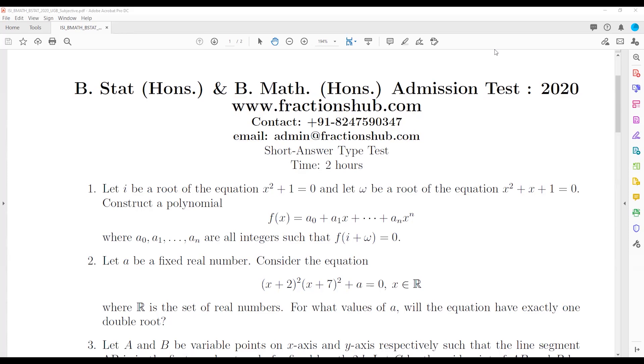one equals to zero, then you need to construct a polynomial where that polynomial will have all integer coefficients and it will have one of the roots to be i plus omega.